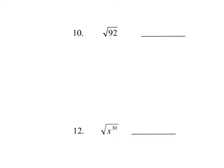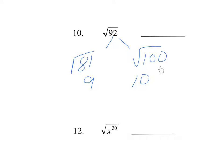The square root of 92 is between the perfect squares 81 and 100, whose square roots are 9 and 10. It looks like it's closer to 100, so this is going to be approximately 9.7. Those are approximations.